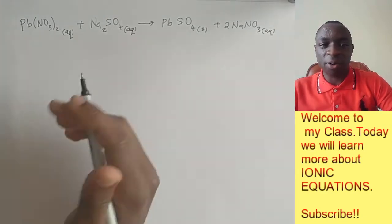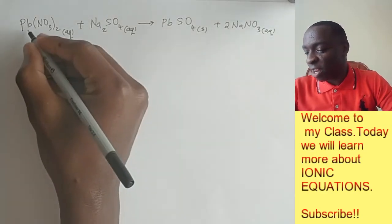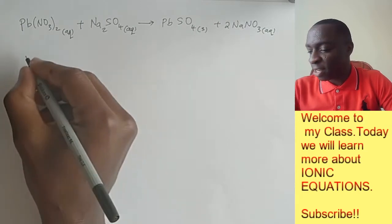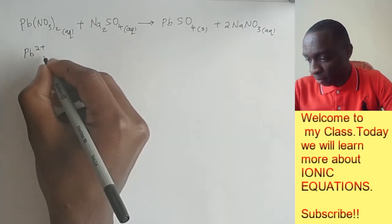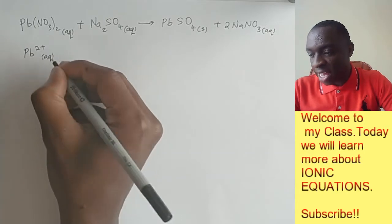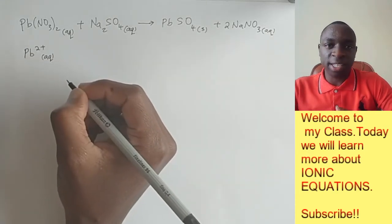Just to narrow it down and make it very easy, we just write the symbol for lead ions, which is just like this. And of course, you maintain that state symbol because it is very important.